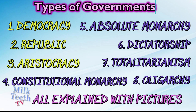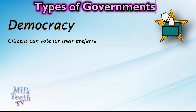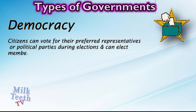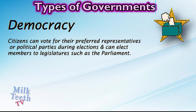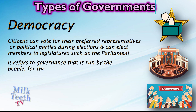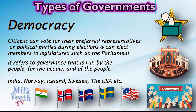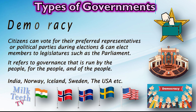Types of Governments. Democracy: Citizens can vote for their preferred representatives or political parties during elections and can elect members to legislatures such as the parliament. It refers to governance that is run by the people, for the people, and of the people. Countries like India, Norway, Iceland, Sweden, and the USA are all examples of a democratic form of government.